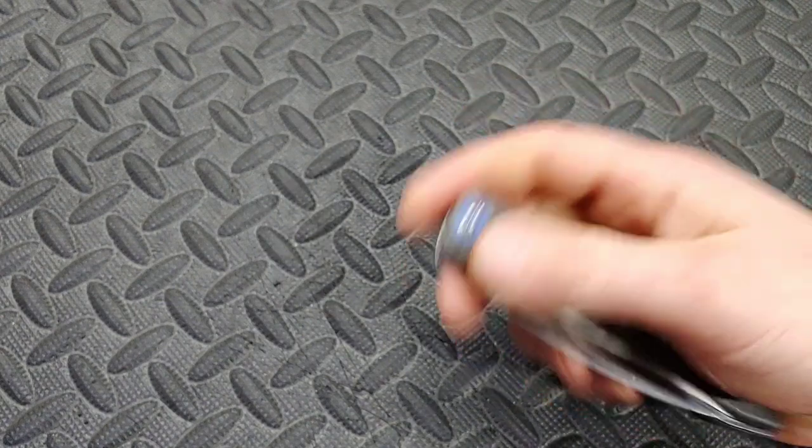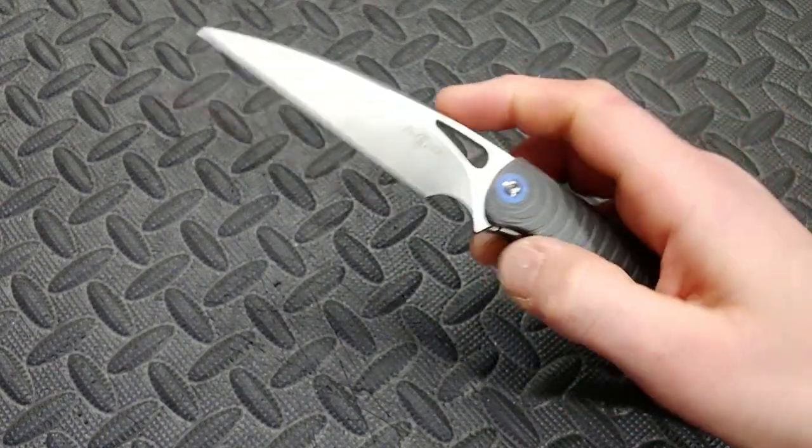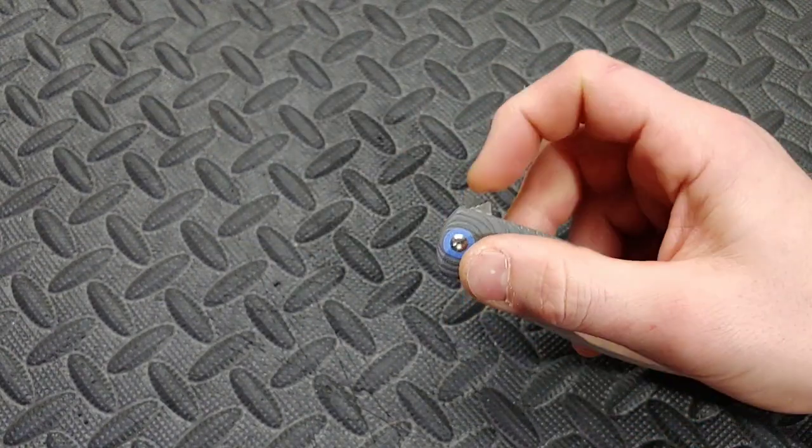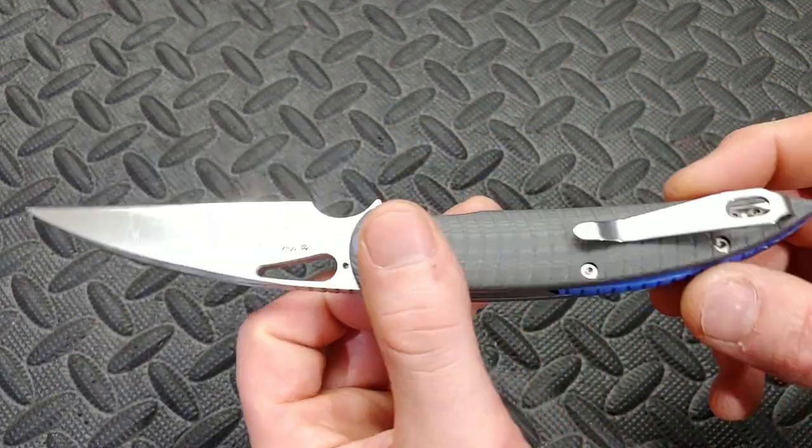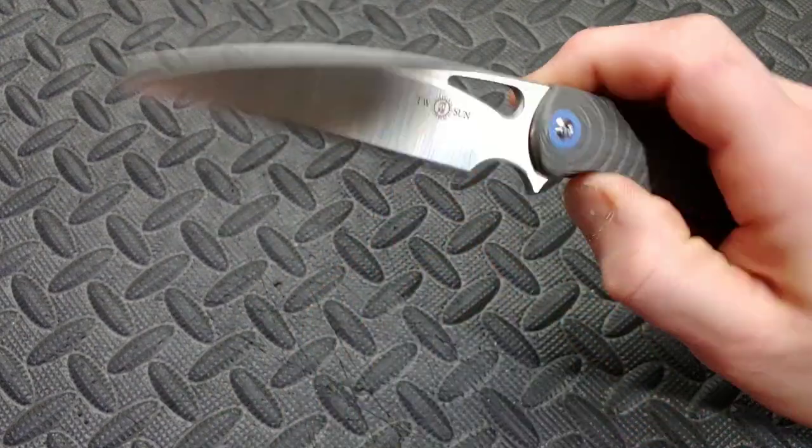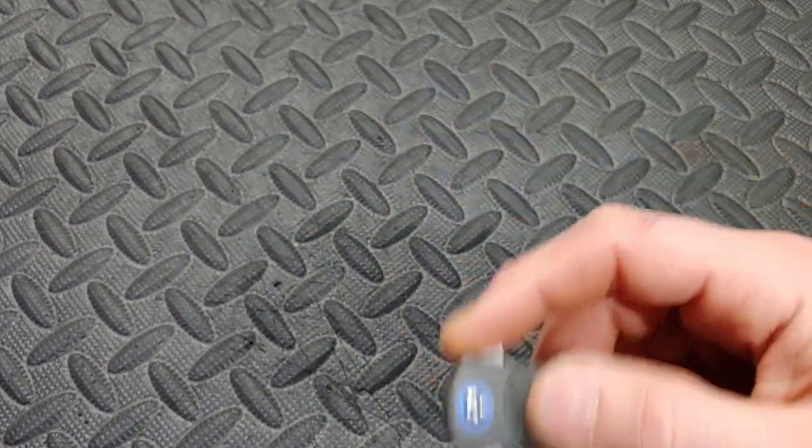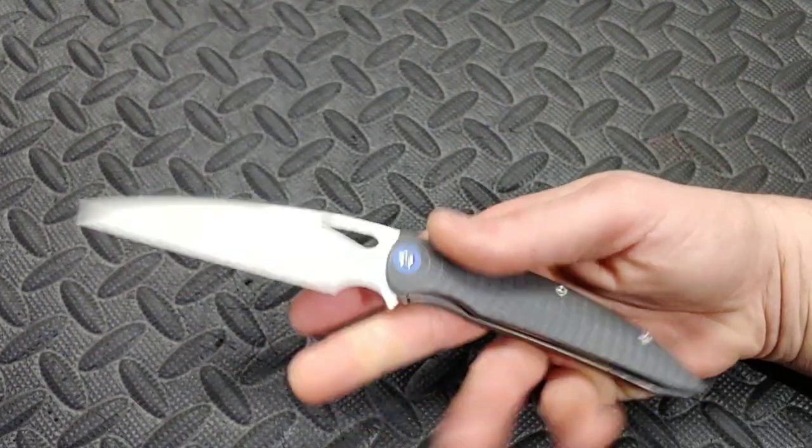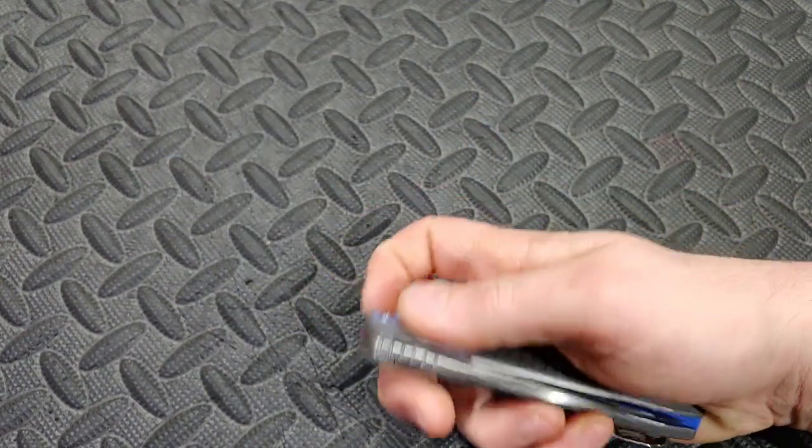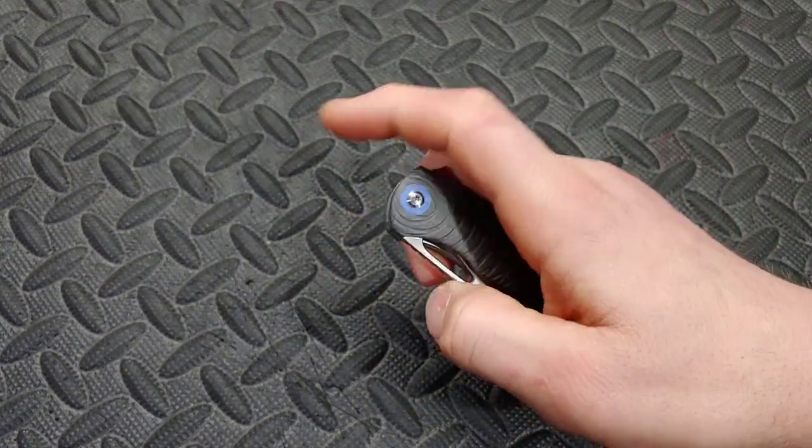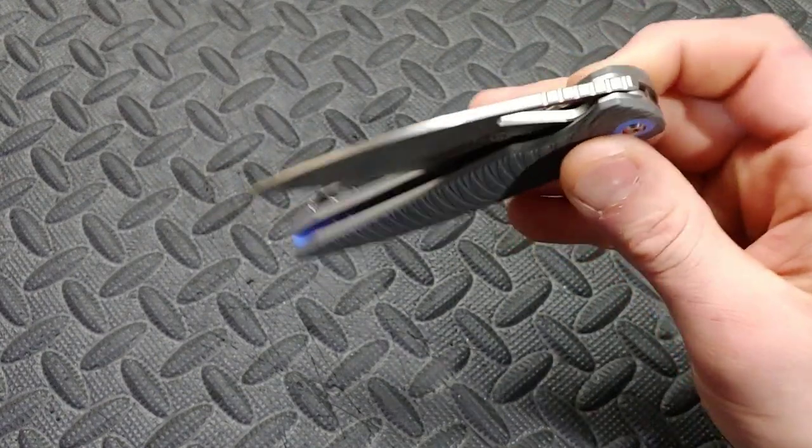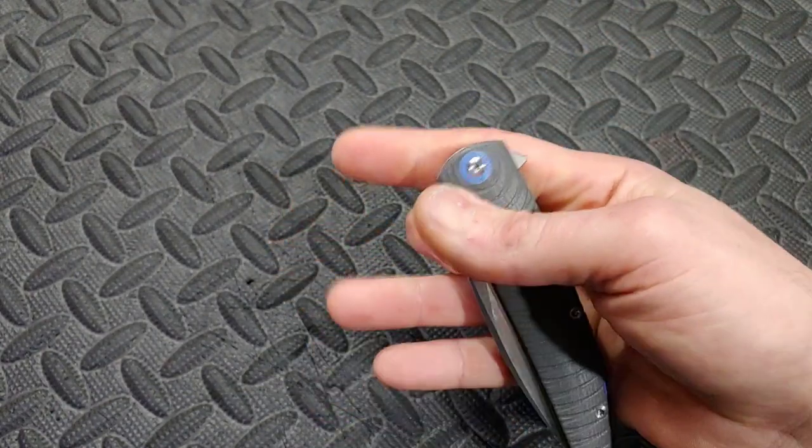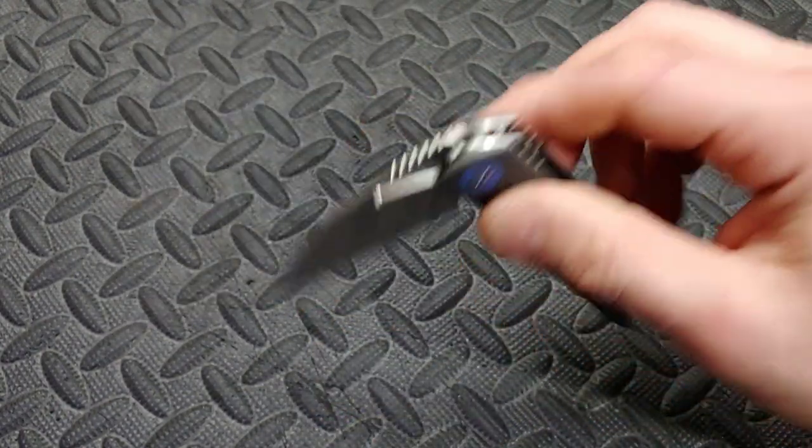The action is really good on this. It prefers a light switch but you can push button it, but it does prefer the light switch. Nice deep carry clip. And you can get these, the price varies on these, but you can probably get them for about 40 bucks. But it just varies depending on where you get it from. Also you can do the reverse flick. It is a little tight in there but you can do it. Nice clicky detent.